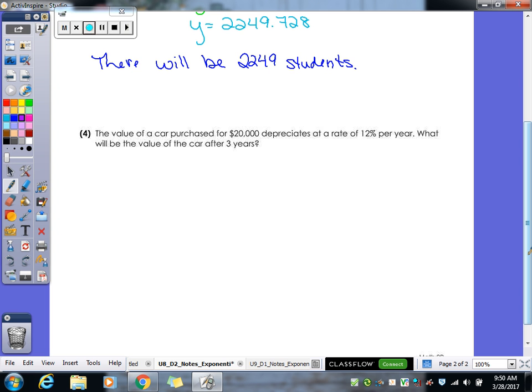And then our last one. The value of a car purchased for $20,000 depreciates at a rate of 12% per year. What will be the value of the car after three years? So let's make our little list here. What is our A value? $20,000. Our rate would just be .12. Because right now the decimal is after the 2. If I move it two places to the left it's in front of the 1. No extra space this time. But if I move that two places I got a space that I got to fill in with a zero. And then our X would be a 3.